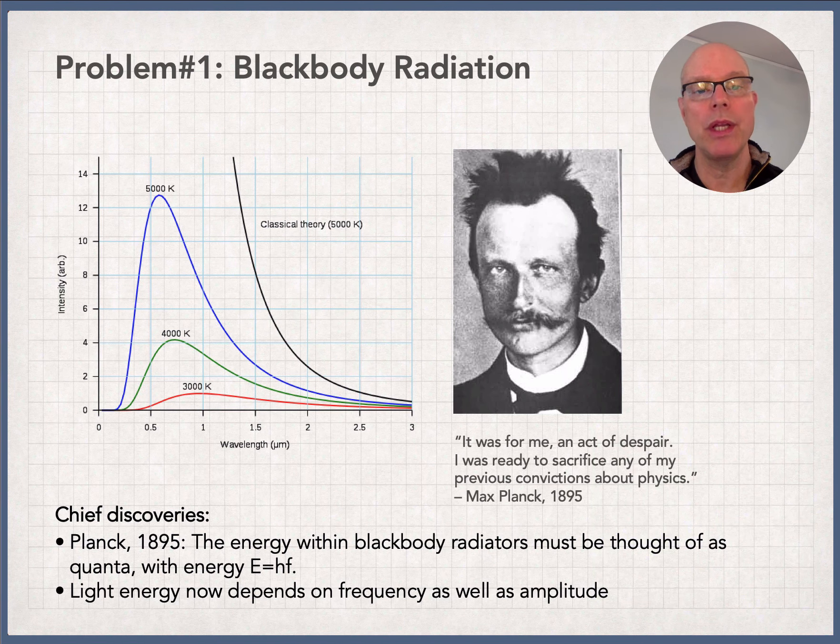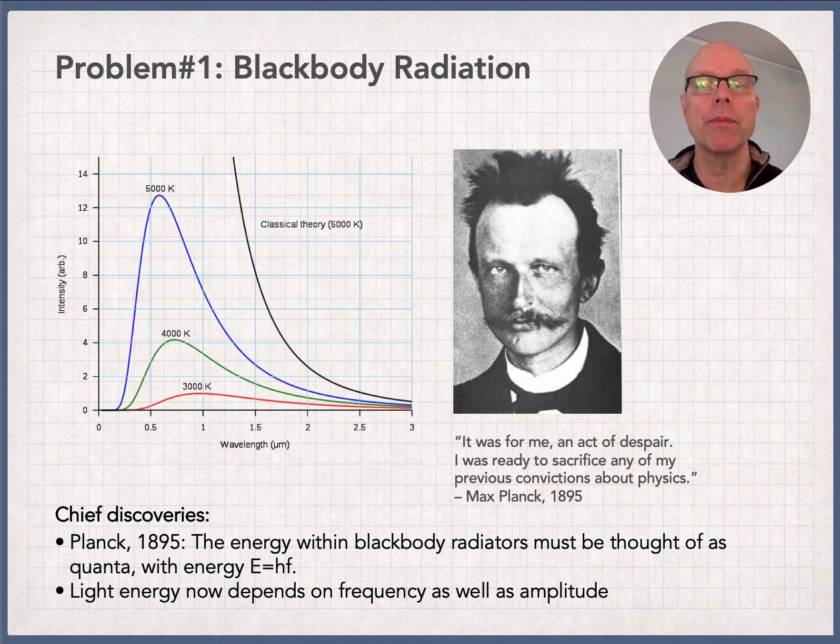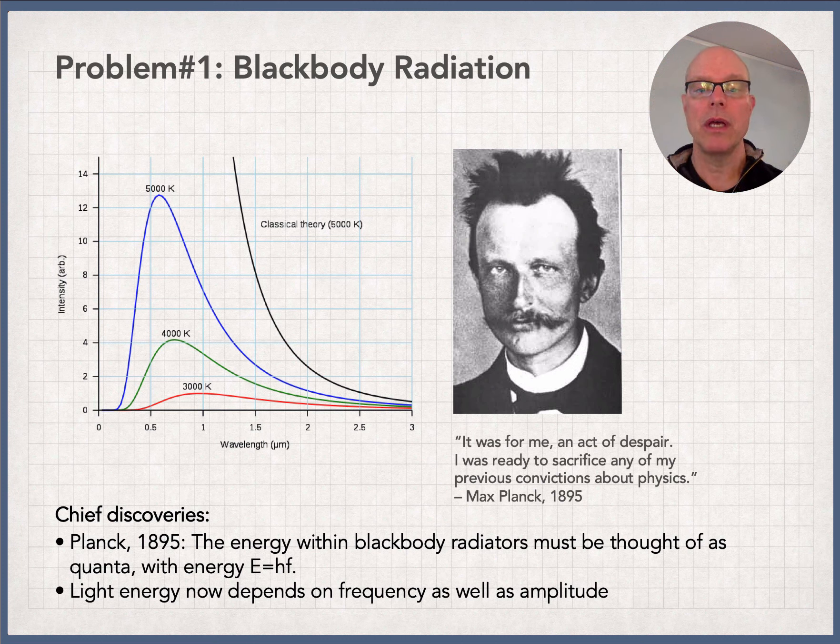In our last discussion, we said that there were two major problems at the end of the 1800s into the 1900s that led to the replacement of Maxwell's theory of electromagnetic light as the final word on the question of what is light and how does it work. One of those things was the blackbody problem.